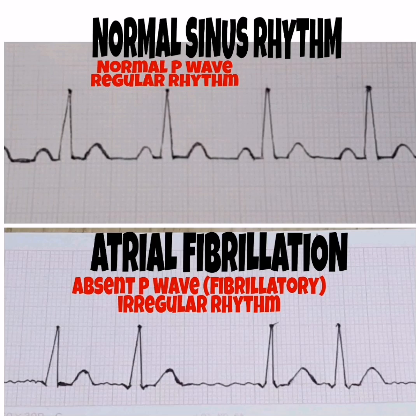The characteristics of atrial fibrillation are absent P waves and irregular rhythm. On top is a picture of a normal sinus rhythm, and at the bottom is a picture of atrial fibrillation. Take a look at the P waves — in atrial fibrillation there is no visible, rounded, and upright P wave. Take a look at the rhythm — it is irregular. Therefore, that is atrial fibrillation.